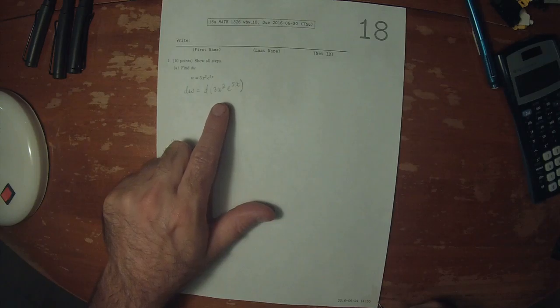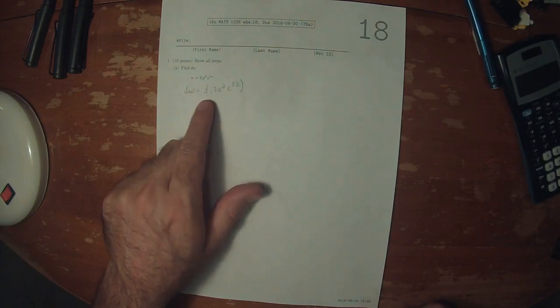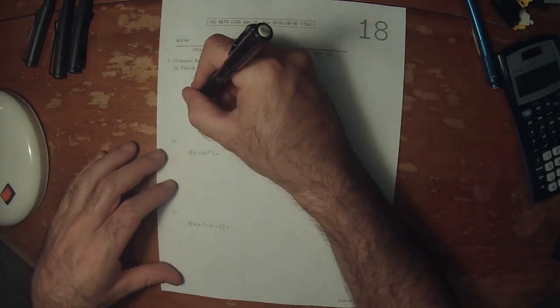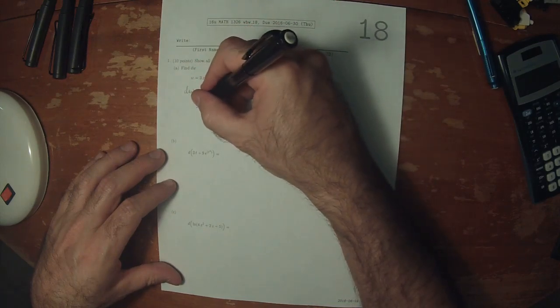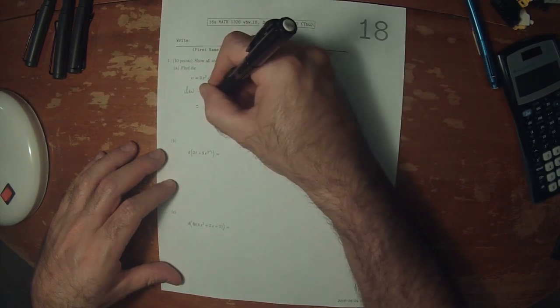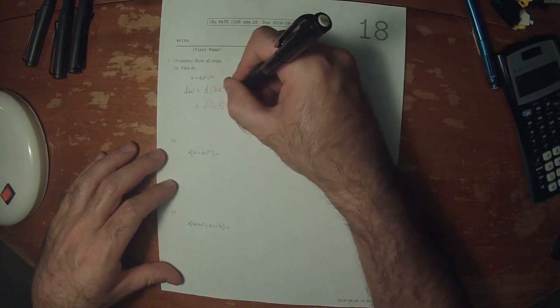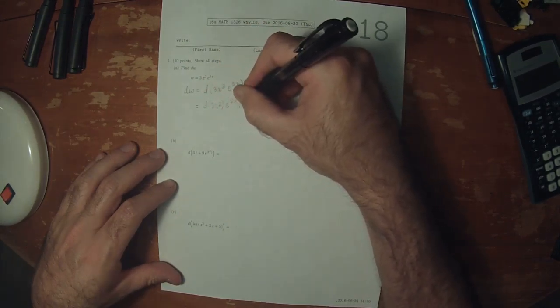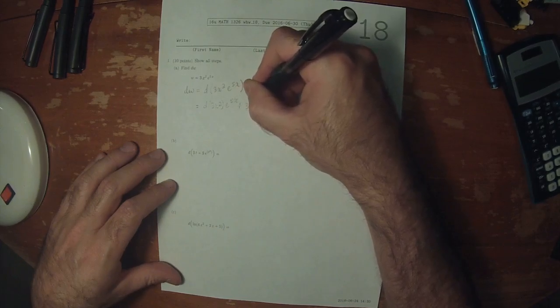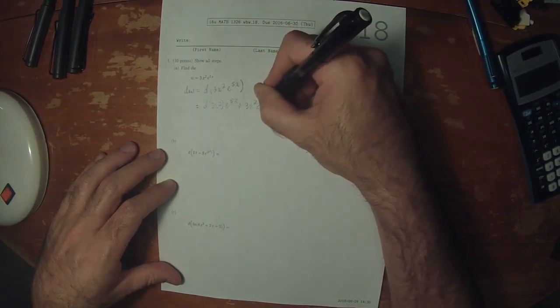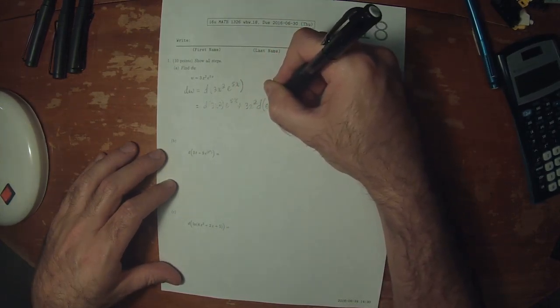And just like the derivative operator, the differential operator also has a product rule. So this will be differential 3x squared e to 5x plus 3x squared differential e to 5x.